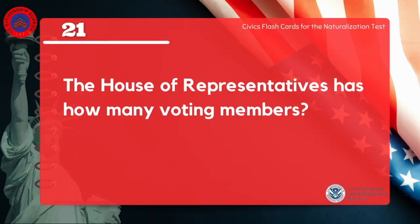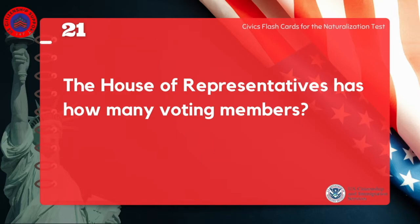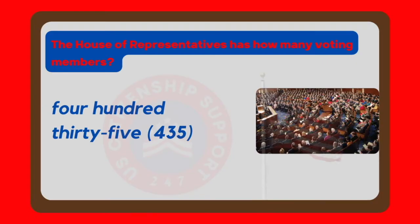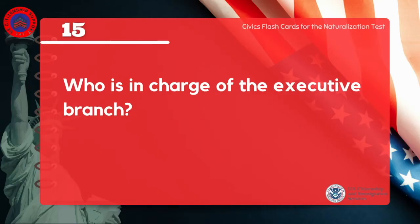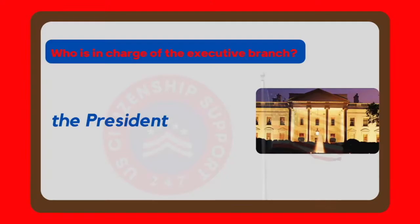The House of Representatives has how many voting members? 435. Who is in charge of the executive branch? The President.